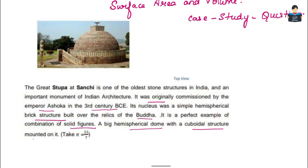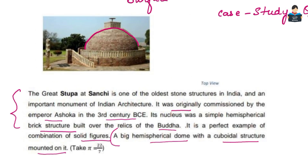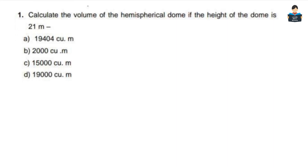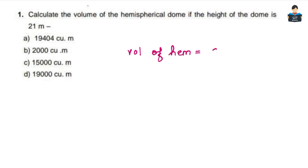So in the first question, we have a big hemispherical dome. If the height of the dome is 21 meters, we can find the volume of the hemisphere. The formula for volume of a hemisphere is 2/3 π r³.